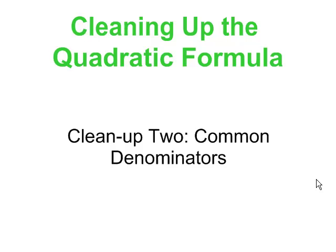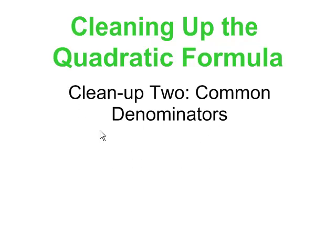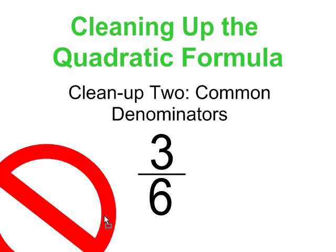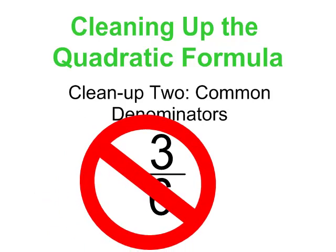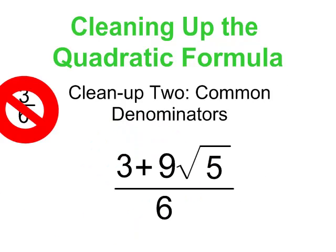This is part 2 of cleaning up the quadratic formula. We're looking at cleaning up common denominators. If you had 3 sixths, you wouldn't leave it that way — you'd turn it into a half. So why would you leave an expression like this?